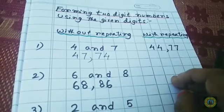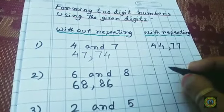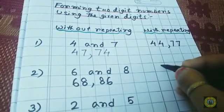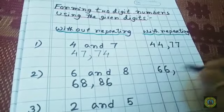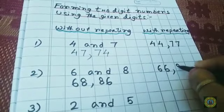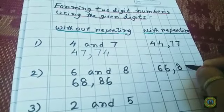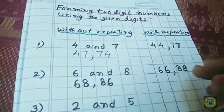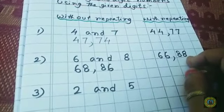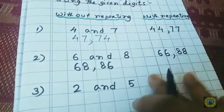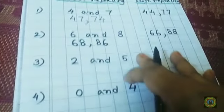Now with repeating, we can make sixty-six and eighty-eight. Understood, children? Now next.